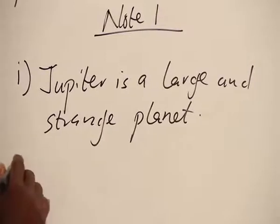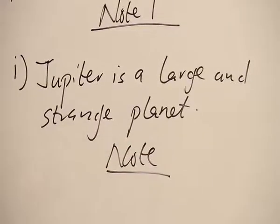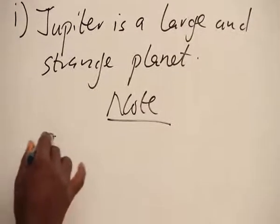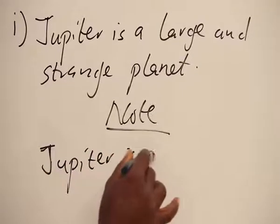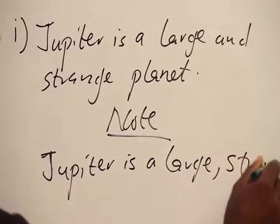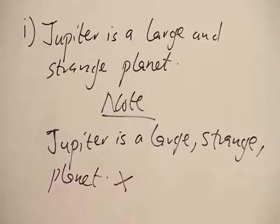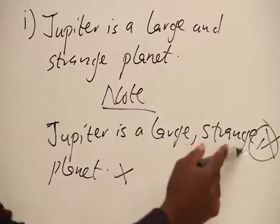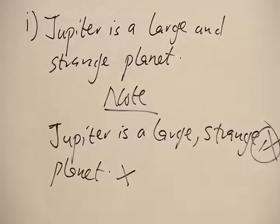Now, we'll have another thing we need to note that the comma we use is just one separating the two adjectives. So that we cannot have Jupiter is a large, strange, planet. This will be wrong because this comma is not supposed to be here. This is the adjective coming before the planet. So, we don't need another comma after strange. We need to note that too.